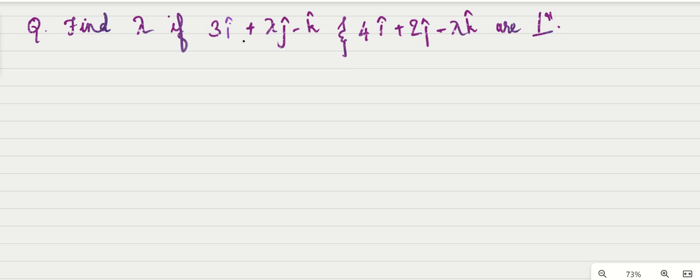Find lambda if 3i plus lambda j minus k and 4i plus 2j minus lambda k are perpendicular. So what I'm doing is taking this vector as A.